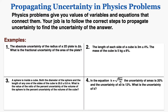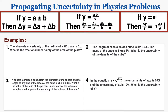Physics problems give you values of variables and equations that connect them. Your job is to follow the correct steps to propagate uncertainty to find the uncertainty of the answer. We'll work through four examples of propagating uncertainty in more complex physics problems where you combine the rules you know. These are the rules for propagating uncertainty for addition and subtraction, multiplication and division, and powers and roots, and I'll apply them as we go through each example.